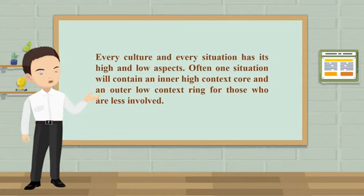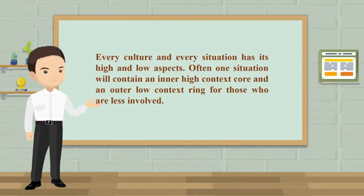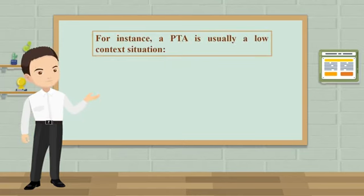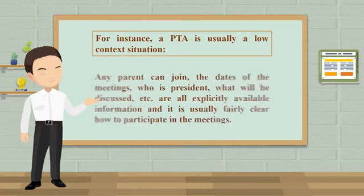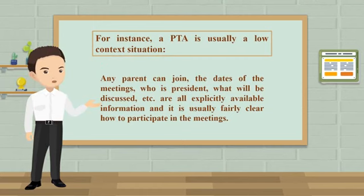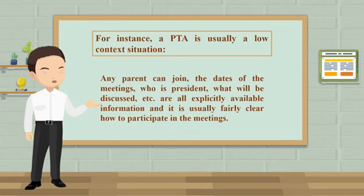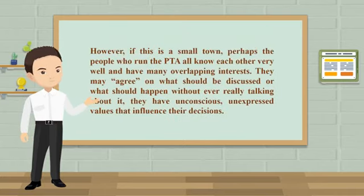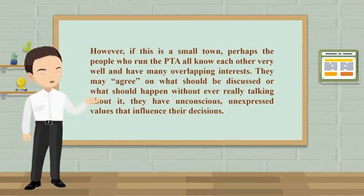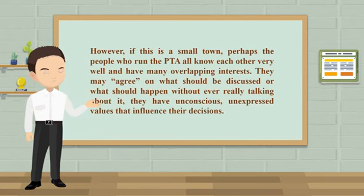Often, one situation will contain an inner high context core and an outer low context ring for those who are less involved. For instance, a PTA is usually a low context situation — any parent can join. The days of the meetings, who is president, what will be discussed, etc., are all explicitly available information, and it is usually fairly clear how to participate. However, if this is a small town, perhaps the people who run the PTA all know each other very well and have many overlapping interests, and may agree on what should be discussed without ever really talking about it.